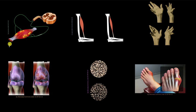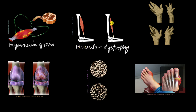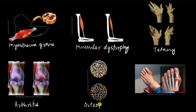To summarize: myasthenia gravis affects the neuromuscular junction so the muscles can't contract properly and become weakened and eventually paralyzed. In muscular dystrophy, the muscles degenerate because of genetic causes. Tetany causes muscles to spasm uncontrollably because of low blood calcium levels. Arthritis is inflammation of joints due to old age or an autoimmune disease. Osteoporosis causes brittle bones due to less deposition of minerals. And gout is another type of arthritis caused by uric acid deposition in the joints.